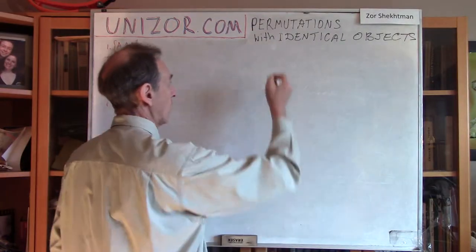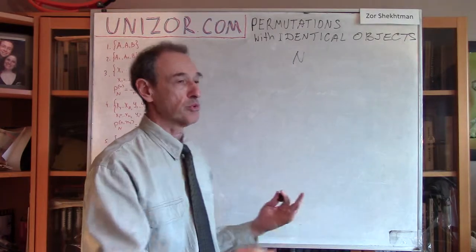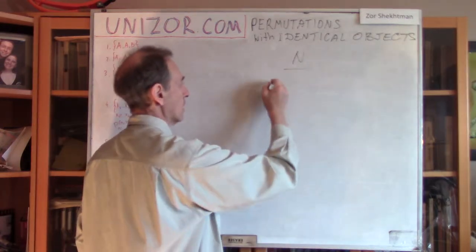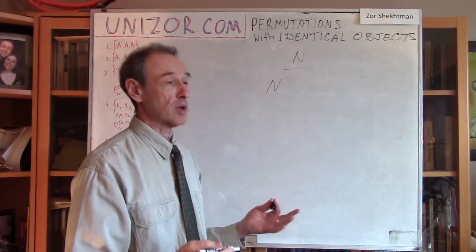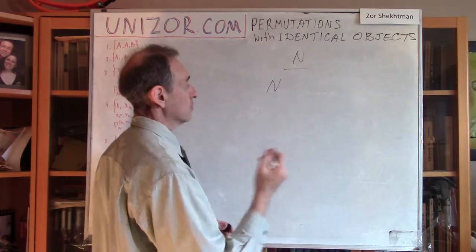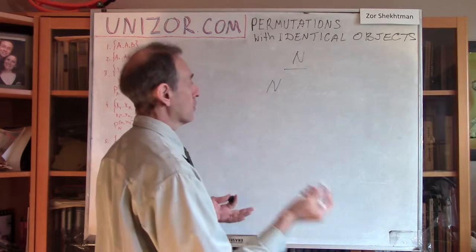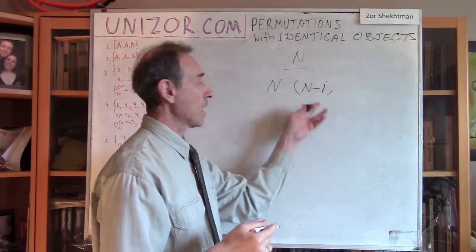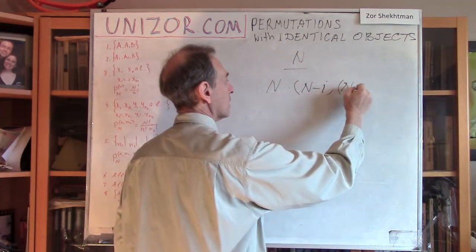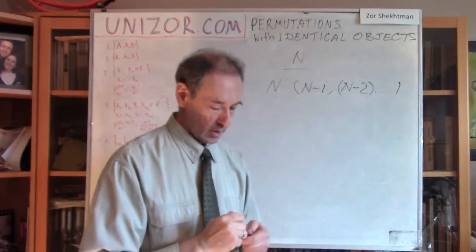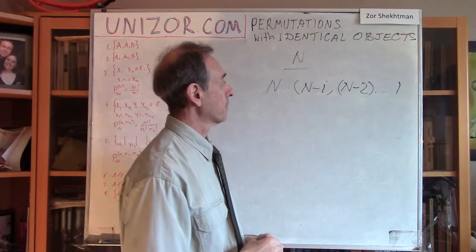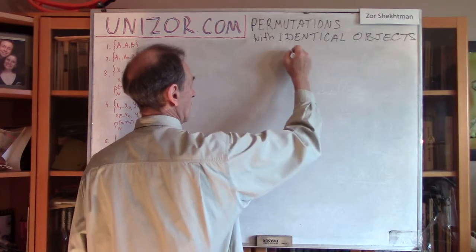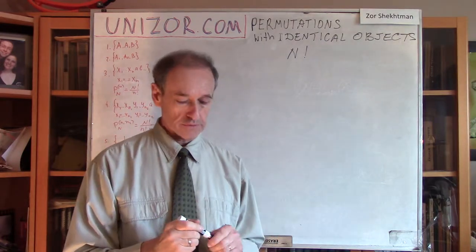As you remember, if you have a certain number, n, of different objects, and you would like to put them in a certain order, the question is how many different orderings exist. For the first place, we have n different choices — we can take any one of the given n objects. But for object number 2, we have only n-1 objects remaining, because one is already taken. So I have to multiply by n-1. Continuing this way up to the remaining only one object for position n, the whole thing is n factorial different orderings of n different objects.